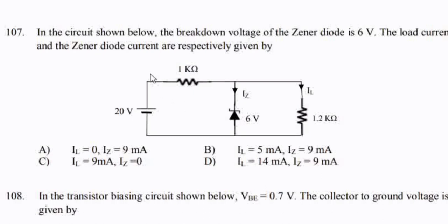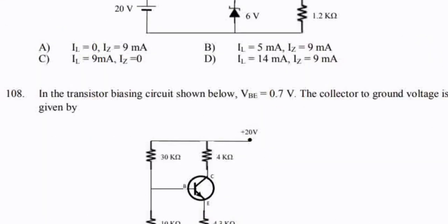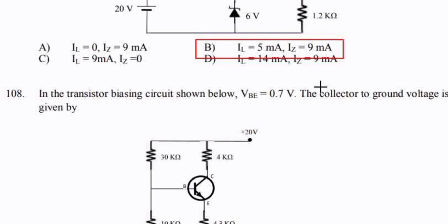Total current I: 14V divided by (1 + 1.2) kΩ. Total current I equals 14 divided by 2.2. Load current IL is 5 mA, Zener current IZ is 9 mA. Option B: IL = 5 mA, IZ = 9 mA.